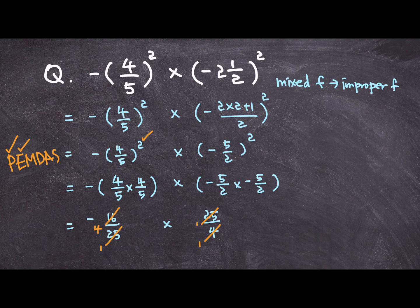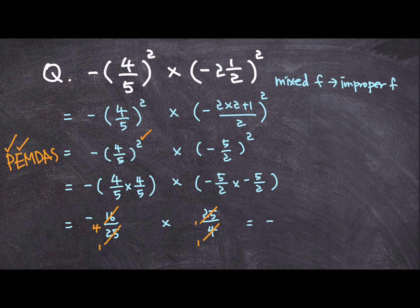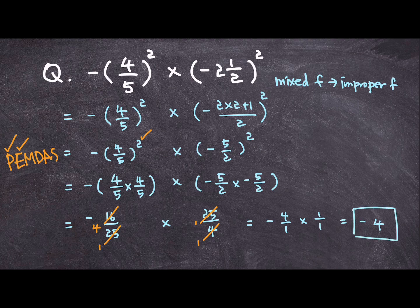So, what I do get is negative 4 over 1 times 1 over 1, or negative 4. And that's going to be our final answer.